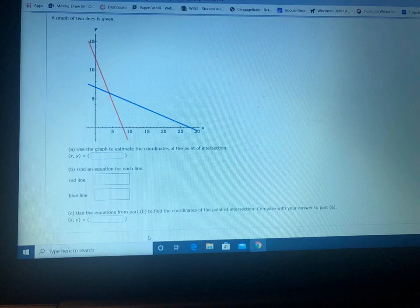This problem says the graph of two lines is given. You can see those two lines, and part A says use the graph to estimate the coordinates of the point of intersection.